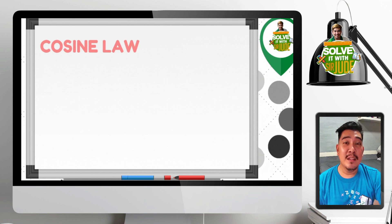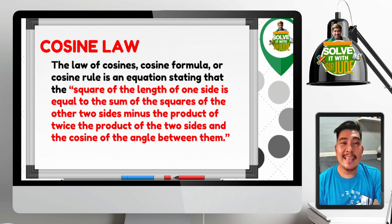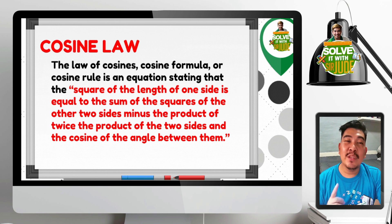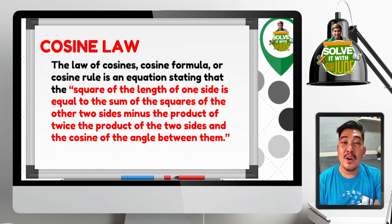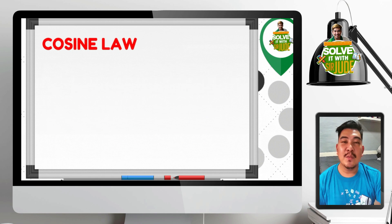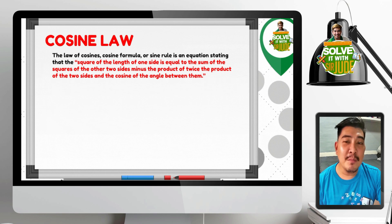The Cosine Law — also called the Law of Cosines, the Cosine Formula, or the Cosine Rule — is an equation stating that the square of the length of one side is equal to the sum of the squares of the other two sides minus the product of twice the two sides and the cosine of the angle between them.